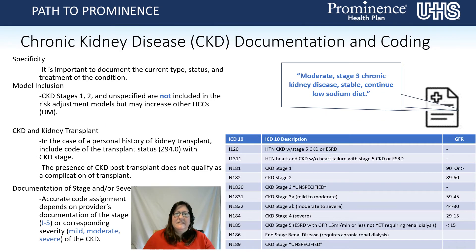Regarding chronic kidney disease documentation and coding, the table here shows the ICD-10 code, the ICD-10 description, and the GFR range — specifically calling out CKD stage 3A and 3B. Specificity is important: document the current type, status, and treatment of the condition. CKD stages 1 and 2, unspecified and unspecified CKD, are not included in the risk adjustment model, but may increase other HCCs such as diabetes mellitus when compiled together.